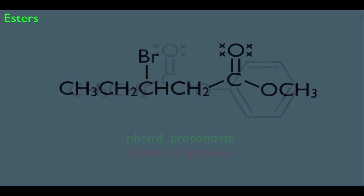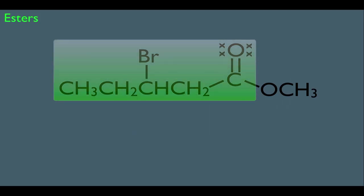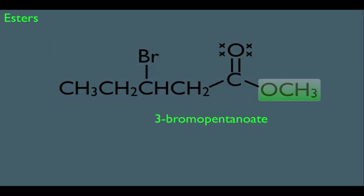Now let's look at a substituted ester. Notice this one has a Br connected to one of the carbons. You would start with the carbonyl side, taking into account the numbering. The carbon doubly bonded to the oxygen has priority, so that's always carbon 1. If this is 5 carbons long, this side would be called pentanoate. Since we have a bromine on the third carbon, we would call this 3-bromopentanoate. We still have to take care of the carboxyl side — there's just a methyl there — so the name of this molecule is methyl 3-bromopentanoate. The common name is methyl beta-bromovalerate.